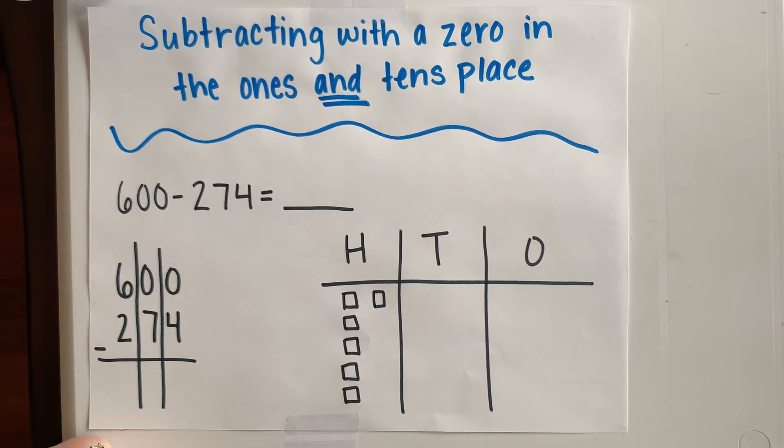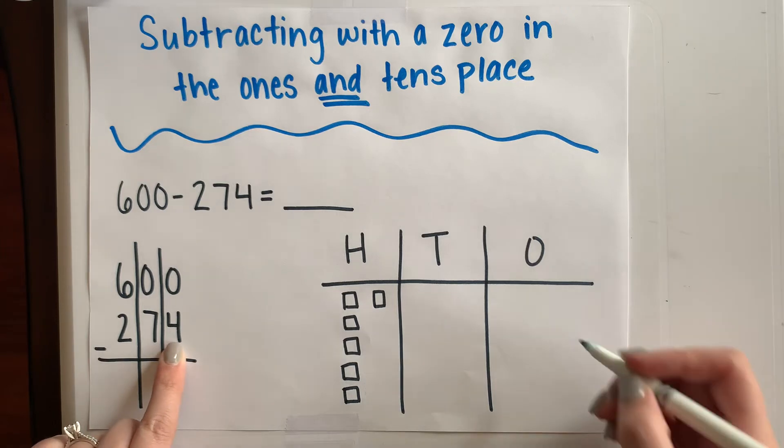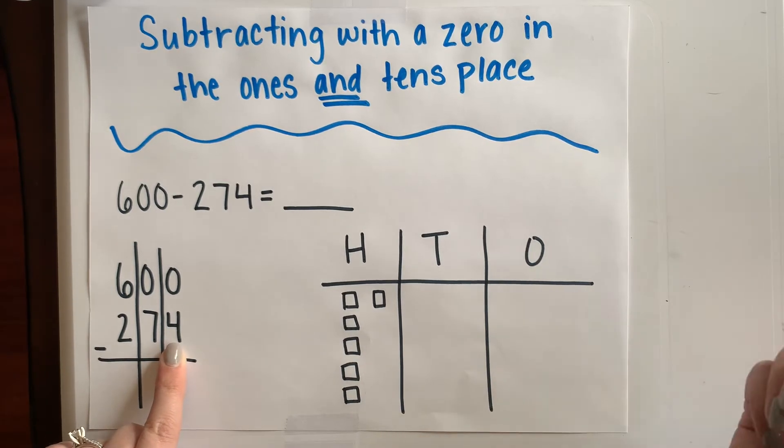And just like that, I am ready to start subtracting. I always start in my ones place. I'm supposed to take away four ones, but I have no ones right here. I can't do it.